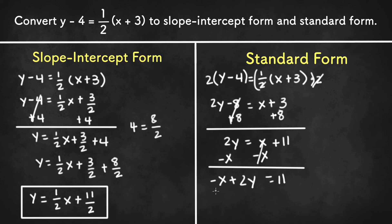Now since the a value in standard form cannot be negative, we need to multiply both sides of the equation by negative 1. And if we multiply both sides of the equation by negative 1, we get negative 1 times negative x, or just x; negative 1 times 2y, or negative 2y; equals 11 times negative 1, or negative 11.